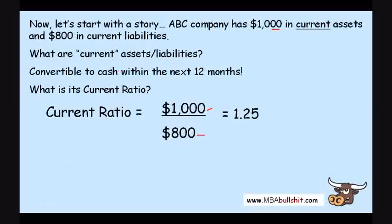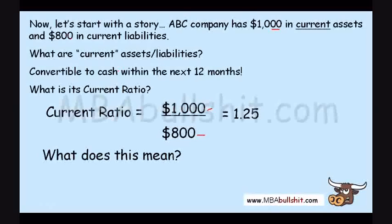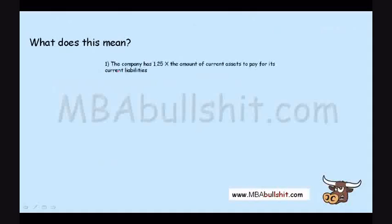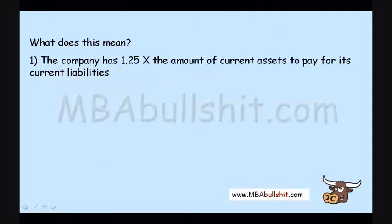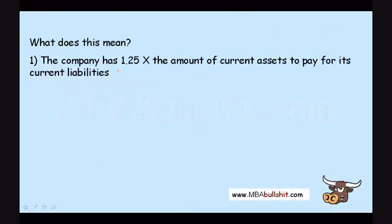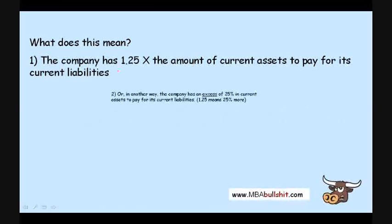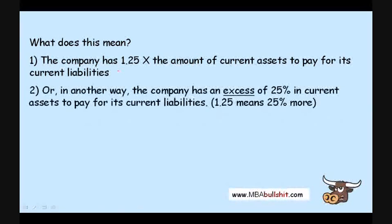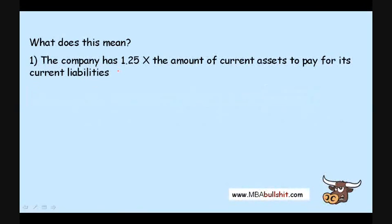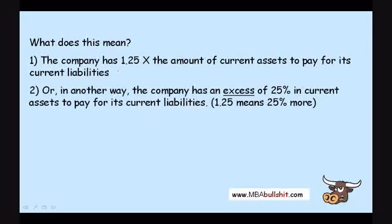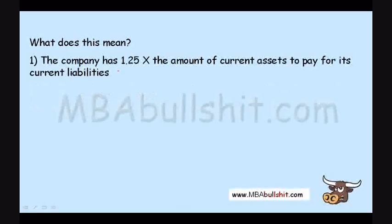The more important thing is what does this mean? What does 1.25 mean with the current ratio? It means that the company has 1.25 times the amount of current assets to pay for its current liabilities. Another way to understand it: the company has an excess of 25% in current assets to pay for its current liabilities — it has more than enough.